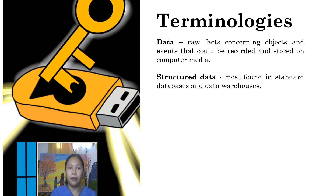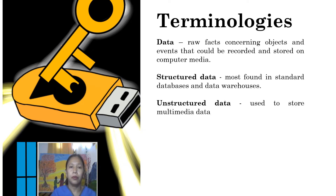We have structured data. If we say structured data, these are stored in tabular format. These are most found in standard databases and data warehouses. Next is unstructured data. Usually, these are the data used to store multimedia data, such as the video clip, the photo image, or the sound clip.